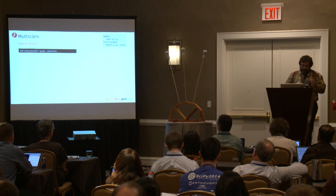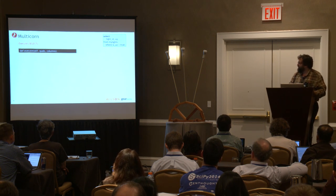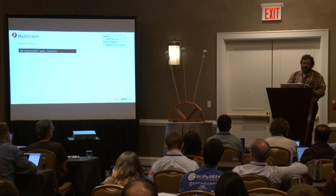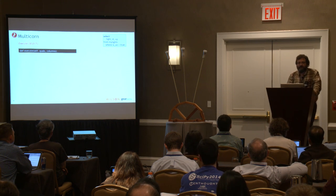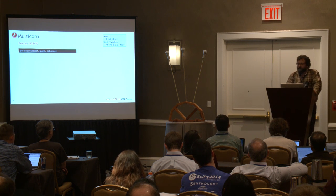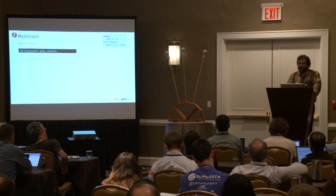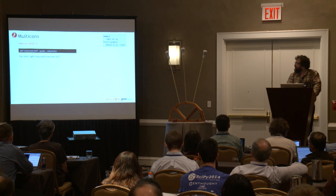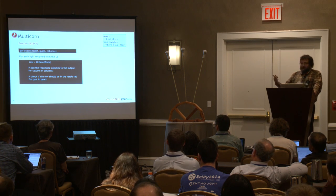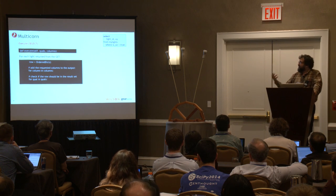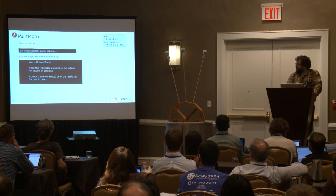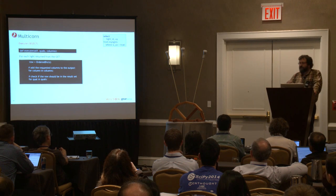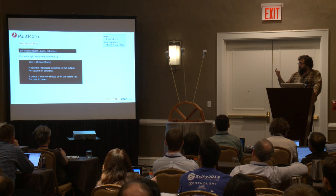In Multicorn, the select is called execute. This is because when you do an update, it actually runs execute first to get the primary keys for the rows being updated, then does the update — so execute has more than one use. In the execute statement, we do a GET to our API to get all the lights, iterate through them, set them in an ordered dictionary so rows stay in the order they were requested, then pull in each column value.